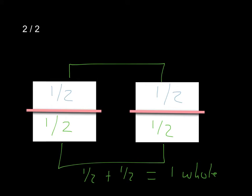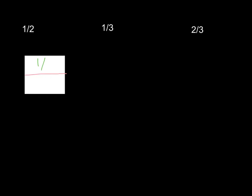Let's look at another set of problems. We can have one half, one third, and two thirds. With one half, what we're looking at is we have one shape — a rectangle — that we're dividing into two pieces. So one person would get one half, and the next person would also get one half.